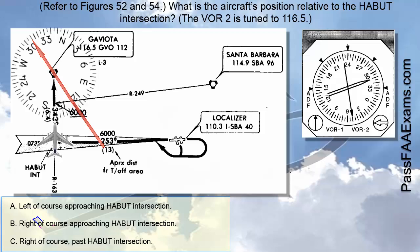This could have been enough to answer the whole question, because if two answers put us past the HABIT intersection, then we would be left only with one correct answer. But in this case, it only helps us eliminate answer C, as we cannot be past the HABIT intersection. On the next slide, we will deal with the localizer itself, to see whether we are left or right of its course.